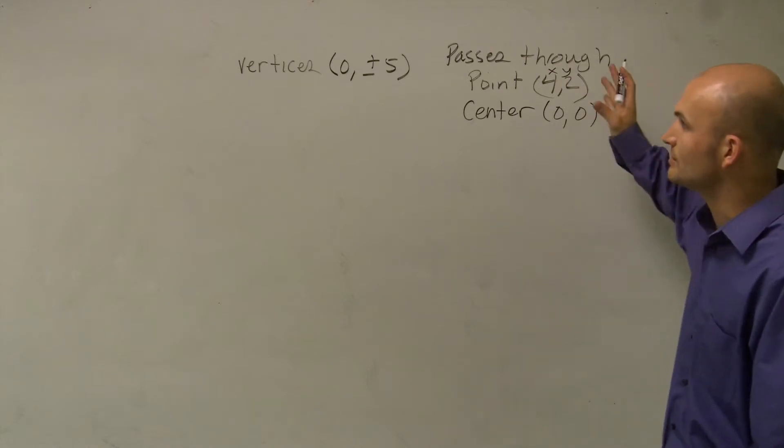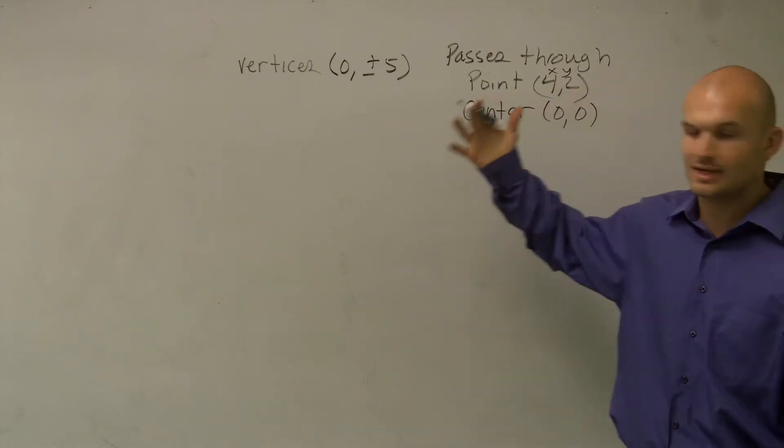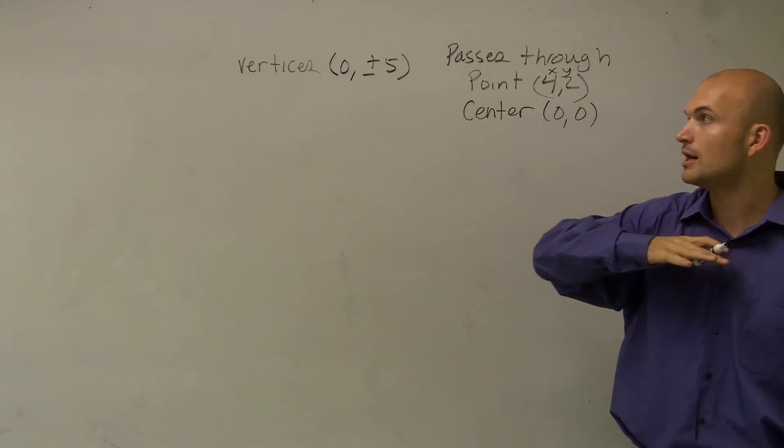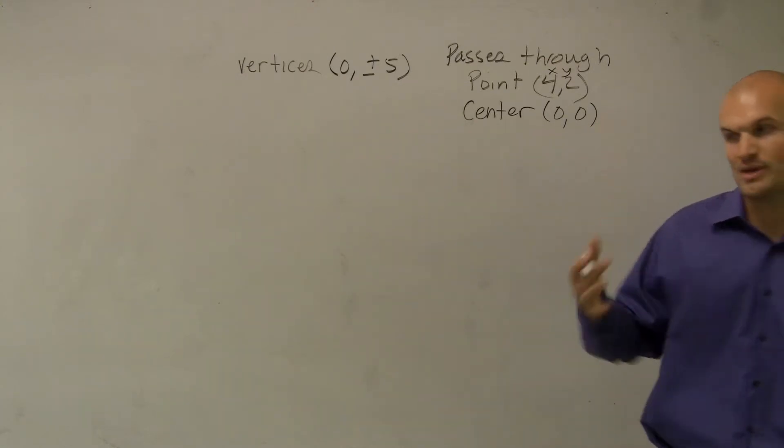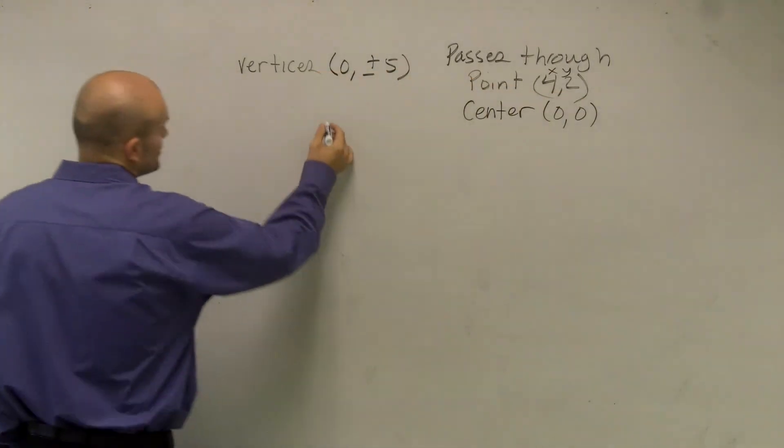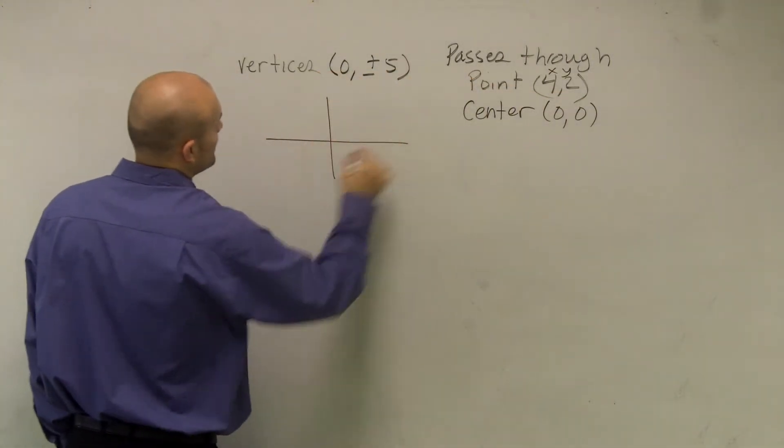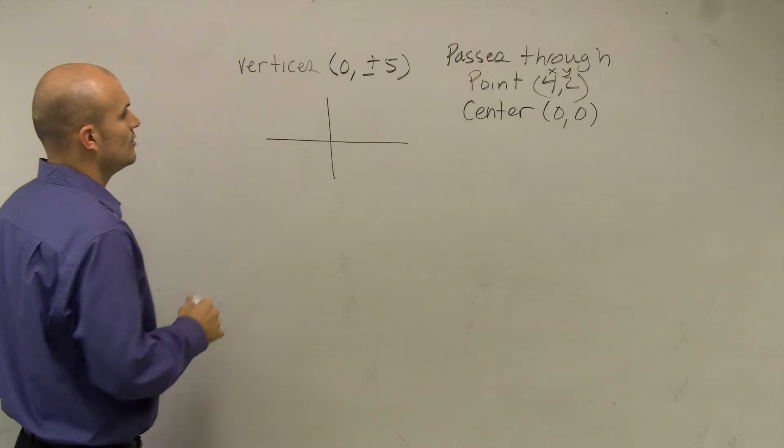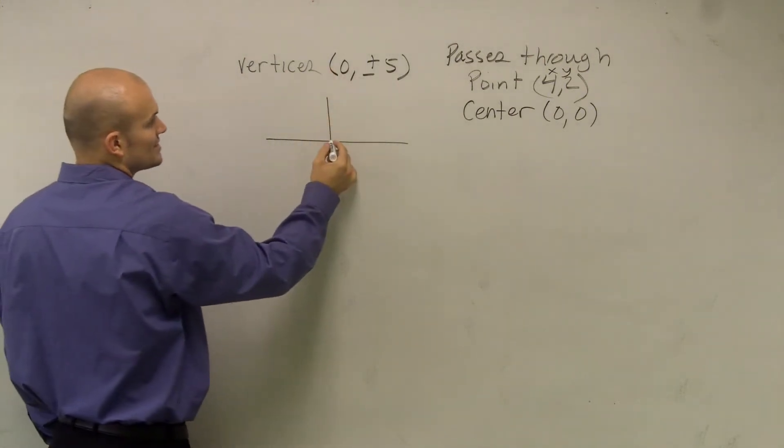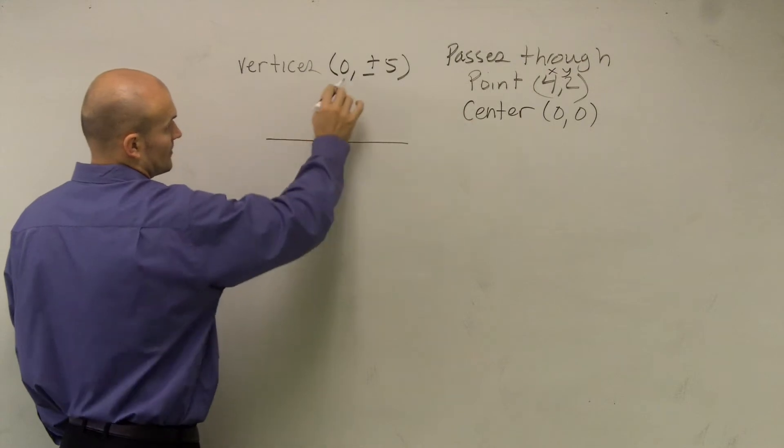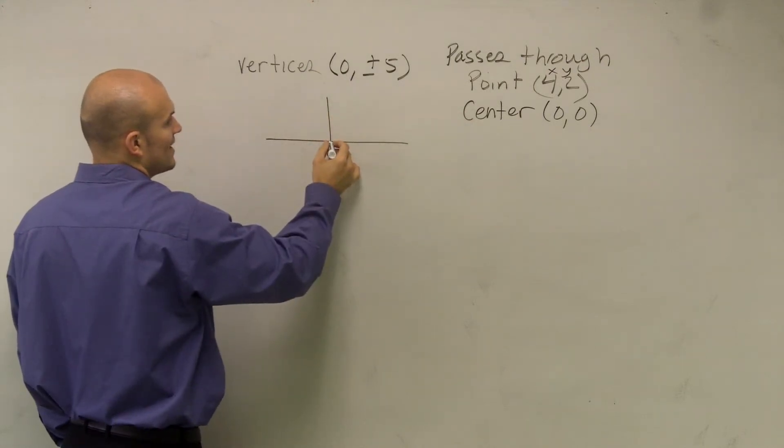So the first thing, if you remember my steps, is determining whether we're going to have a horizontal major axis or a vertical major axis. I'm going to plot what we have. My vertices lie on the major axis, so since my two vertices are (0, 5)...